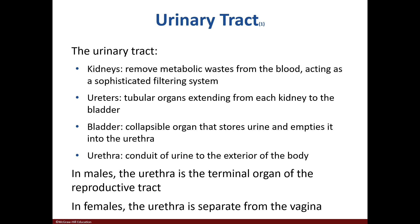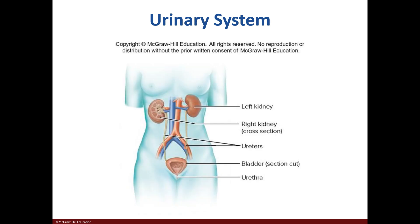The urinary tract consists of the kidneys, which filter; the ureters, that transport urine; the bladder, which stores urine; and the urethra, that also transports urine. In males, the urethra is the final organ of the reproductive tract. Females have the urethra separate from the vagina. Here we can see the kidneys, ureters, bladder, and urethra.